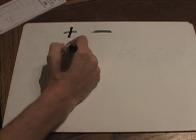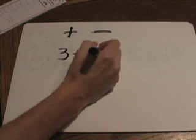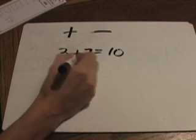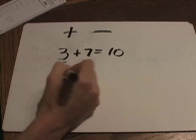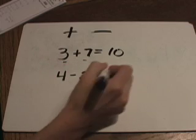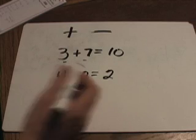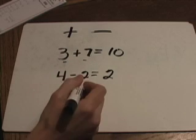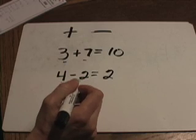Problems that look like this: 3 plus 7 equals 10. Well both of those numbers are positive, or say 4 minus 2, that answers 2. You have a positive 4 and a positive 2 and one number is being taken away from the other number.